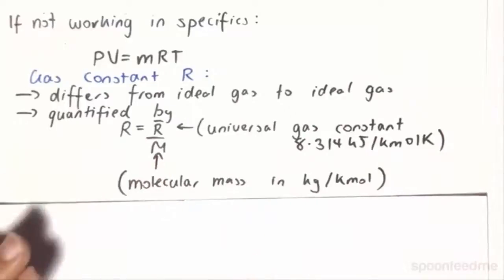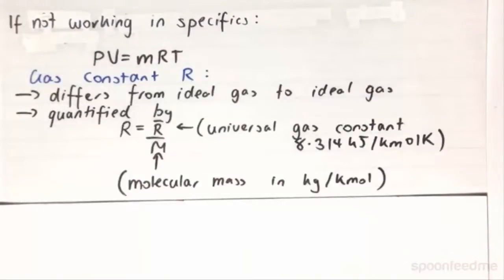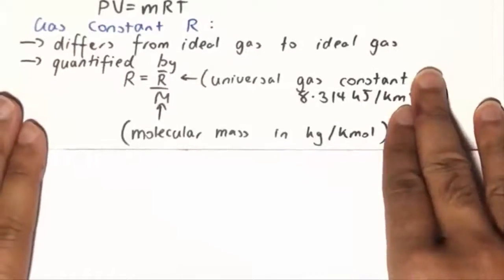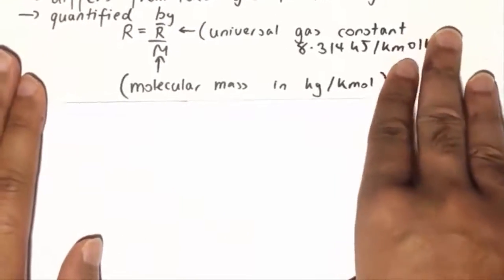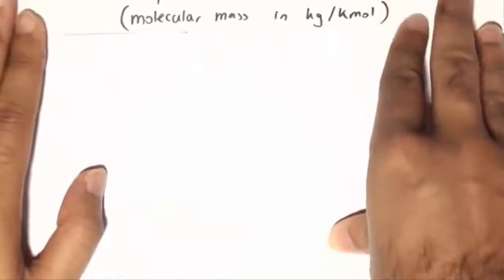And M is the molecular mass in kilograms per kilomole. So that is, for example, related to the atomic masses, in which case you will need a periodic table in order to determine the molecular mass. Generally however, it will be given to you in thermodynamics.